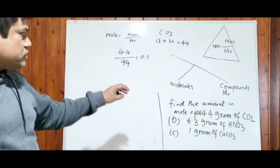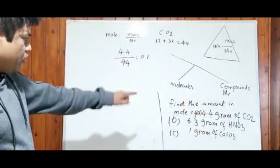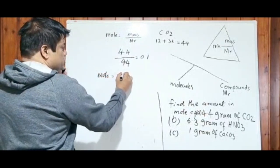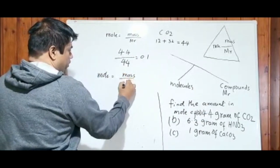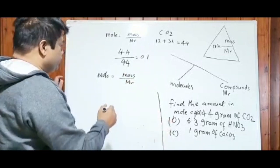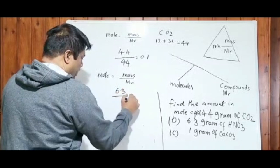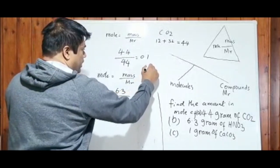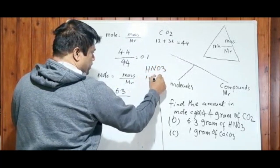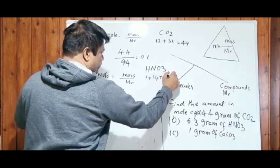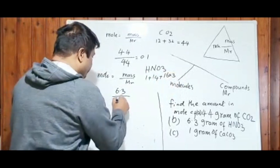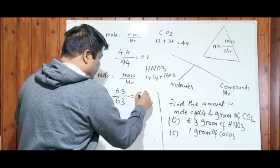Now I will try for B. Mole of nitric acid, which is mass over MR. Look at the mass which is given in the question: 6.3. And MR of nitric acid HNO3: hydrogen 1 plus nitrogen 14 plus oxygen 16 times 3. When you work it out you will get 63. So which is nothing but 0.1 mole.